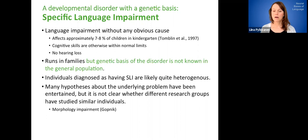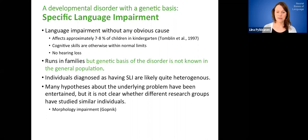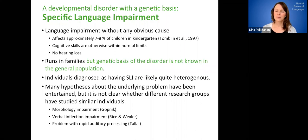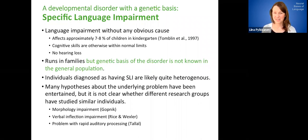And probably because of the heterogeneity, there have been many different hypotheses about exactly what the underlying problem is. But it's not clear whether all the research groups have really studied similar types of individuals. So for example, it's been hypothesized that they have underlying, the fundamental problem, the problem is one with morphology, even specific type of morphology, so verbal inflection. The underlying problem has been hypothesized to also lie in just an impairment with rapid auditory processing, and so forth. So it's actually a pretty confusing literature overall.